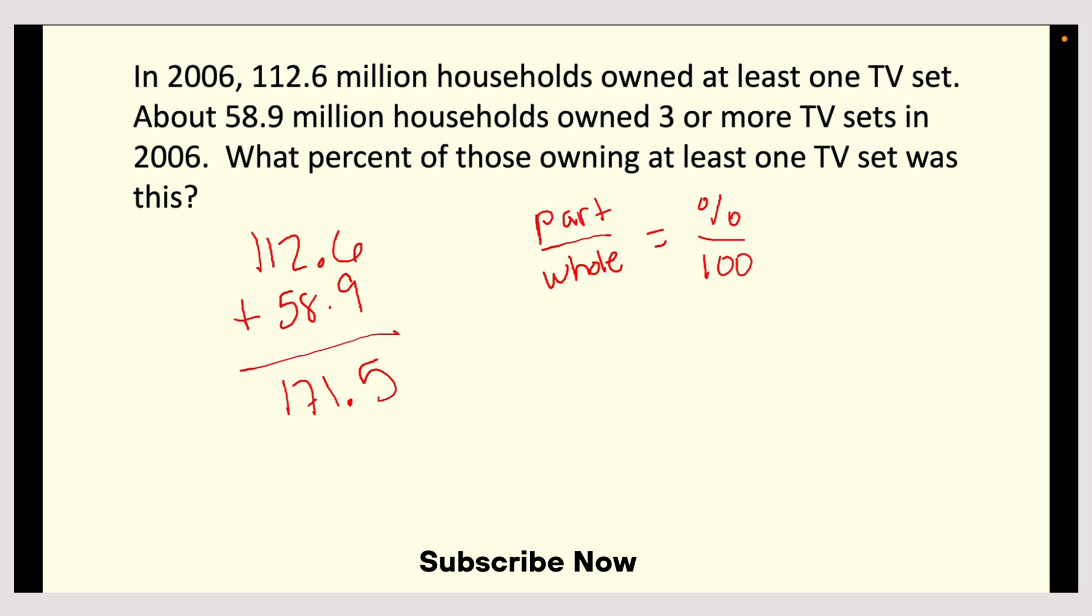So the part 112.6 is how many owned at least one TV set, and then the total or the whole is 171.5, and that equals your percent over 100. So cross multiply 112.6 times 100 divide by 171.5, and the percent that you would get is 65.7%.